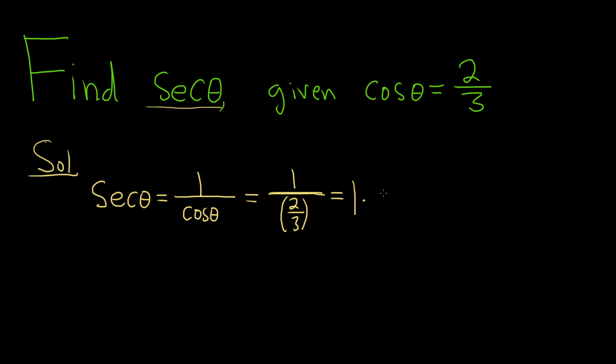So this is really 1 times the reciprocal of 2 thirds, which is 3 over 2, but 1 times 3 over 2 is just 3 over 2. And that is the final answer.